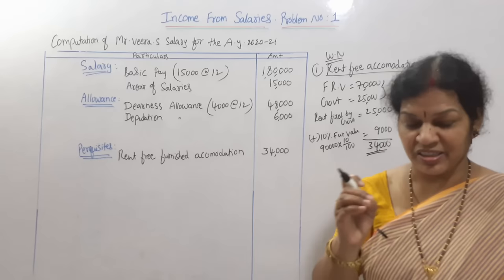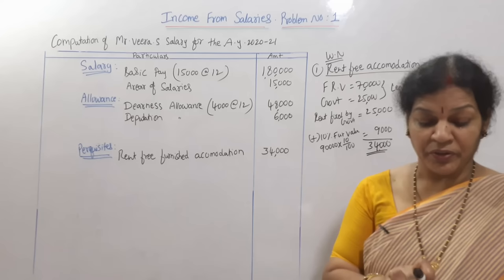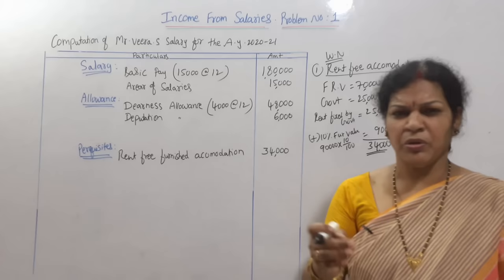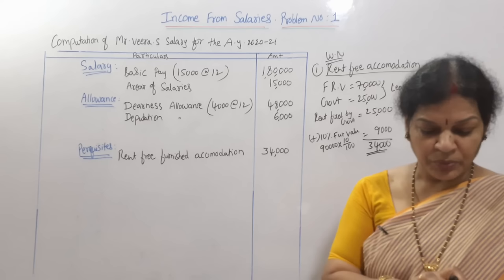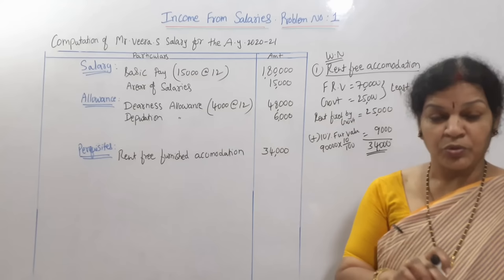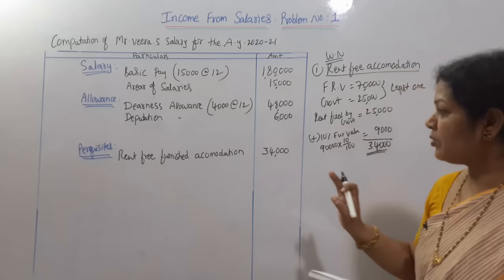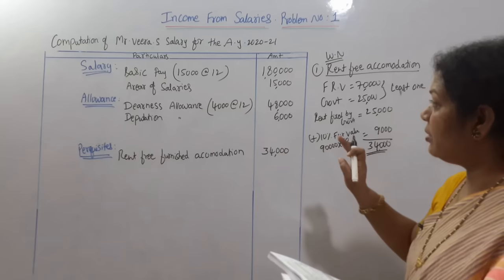Employer's contribution to provident fund ₹20,000 — also exempted. Interest on provident fund at 12% — 12% is acceptable and fully exempted, so we don't consider it. Reimbursement of medical expenses from a recognized government hospital is also exempted and won't be considered as income from salaries. That covers all items.